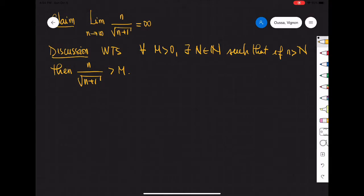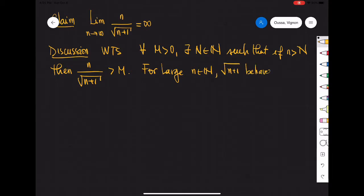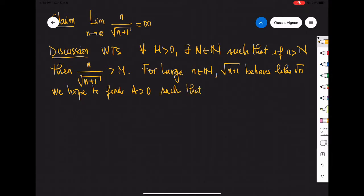Notice that for large n, square root of n plus 1 behaves like square root of n. So perhaps we hope to find some number a greater than zero such that n over square root of n plus 1 is bigger than n over a times square root of n.